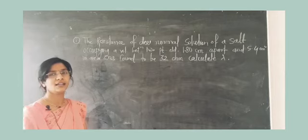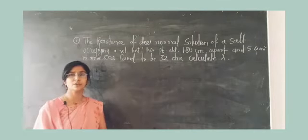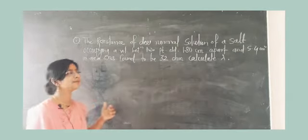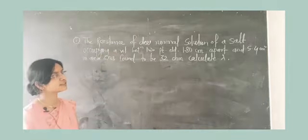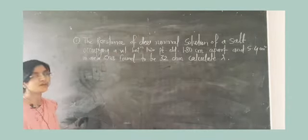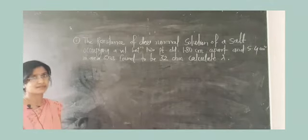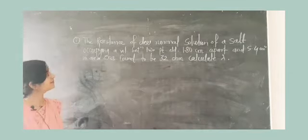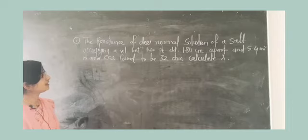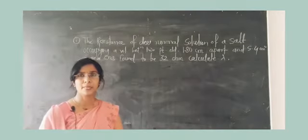One of our friends asked me how to solve this problem, so I'll just take this one first. The problem is that the resistance of deci-normal solution of a salt occupying a volume between two platinum electrodes 1.80 centimeters apart and 5.4 centimeters square in area was found to be 32 ohm. Calculate lambda. In short, I have written here: calculate the equivalent conductance.